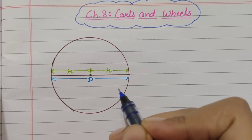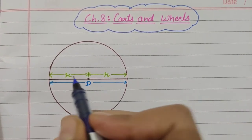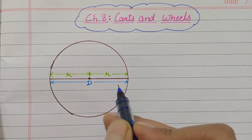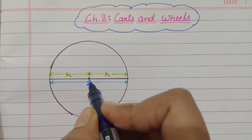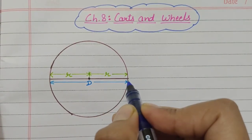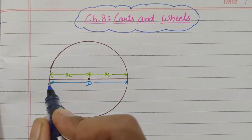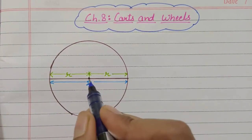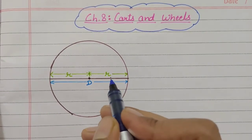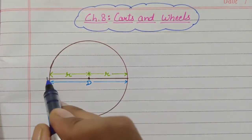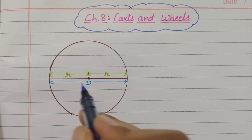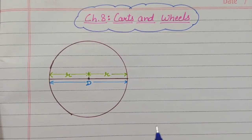In a circle, we know that two times of radius will make a diameter. The radius is the distance from the center to the circumference, and the diameter is the longest chord of a circle passing through the center. If we join two radii together, we get a straight line, and this straight line is known as the diameter of a circle.